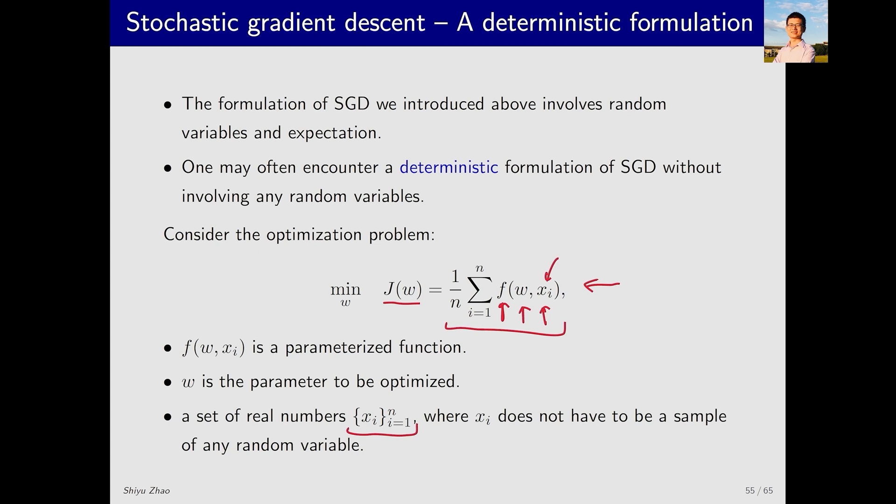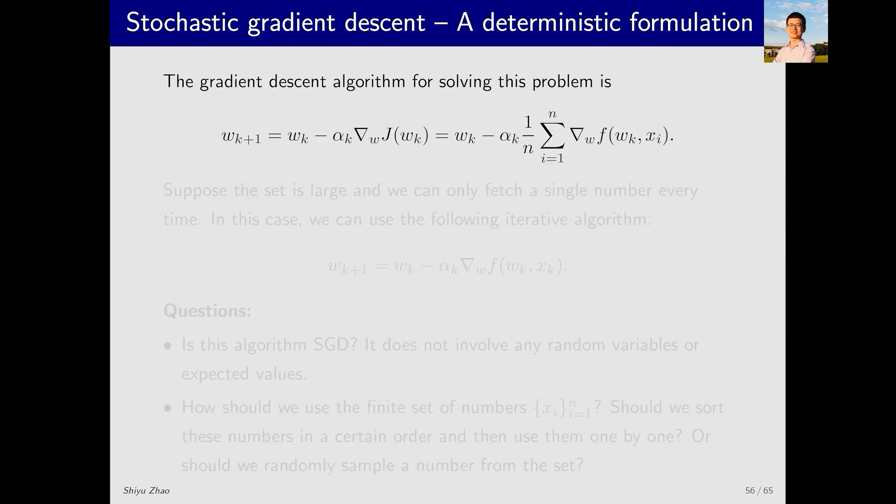They are simply a set of real numbers. To solve this optimization problem using gradient descent, we can write w_{k+1} = w_k - α_k times the gradient. The gradient is as this term.